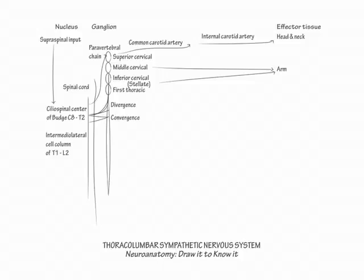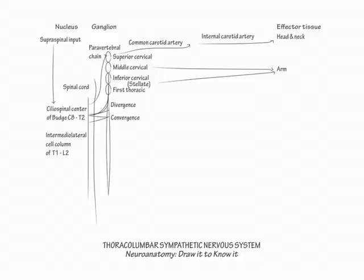Now show that the remaining thoracic, lumbosacral, and coccygeal fibers synapse in thoracoabdominal targets. For example, thoracic postganglionic sympathetic fibers either join a spinal nerve or project alone to thoracic targets as cervical or thoracic cardiac or pulmonary nerves.